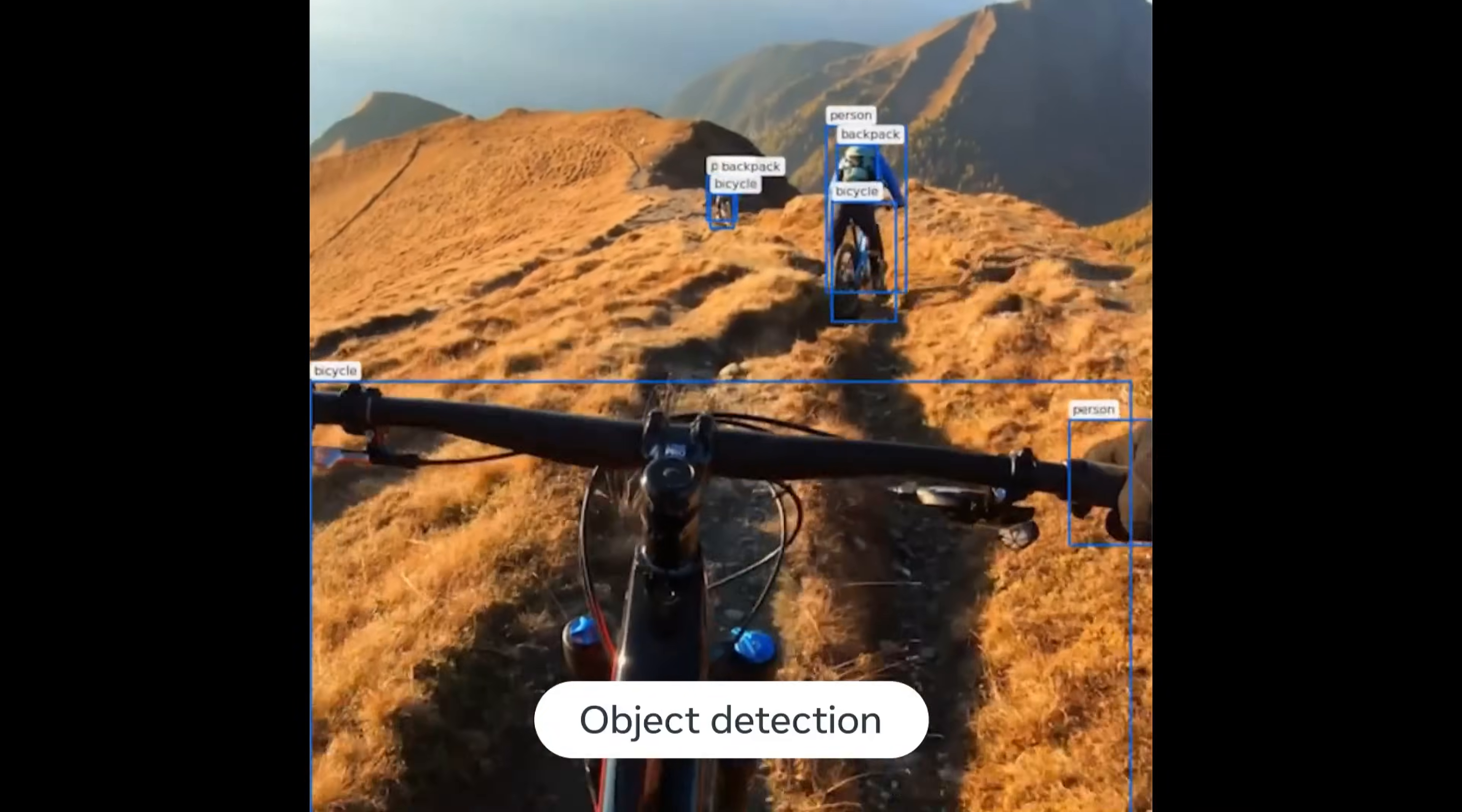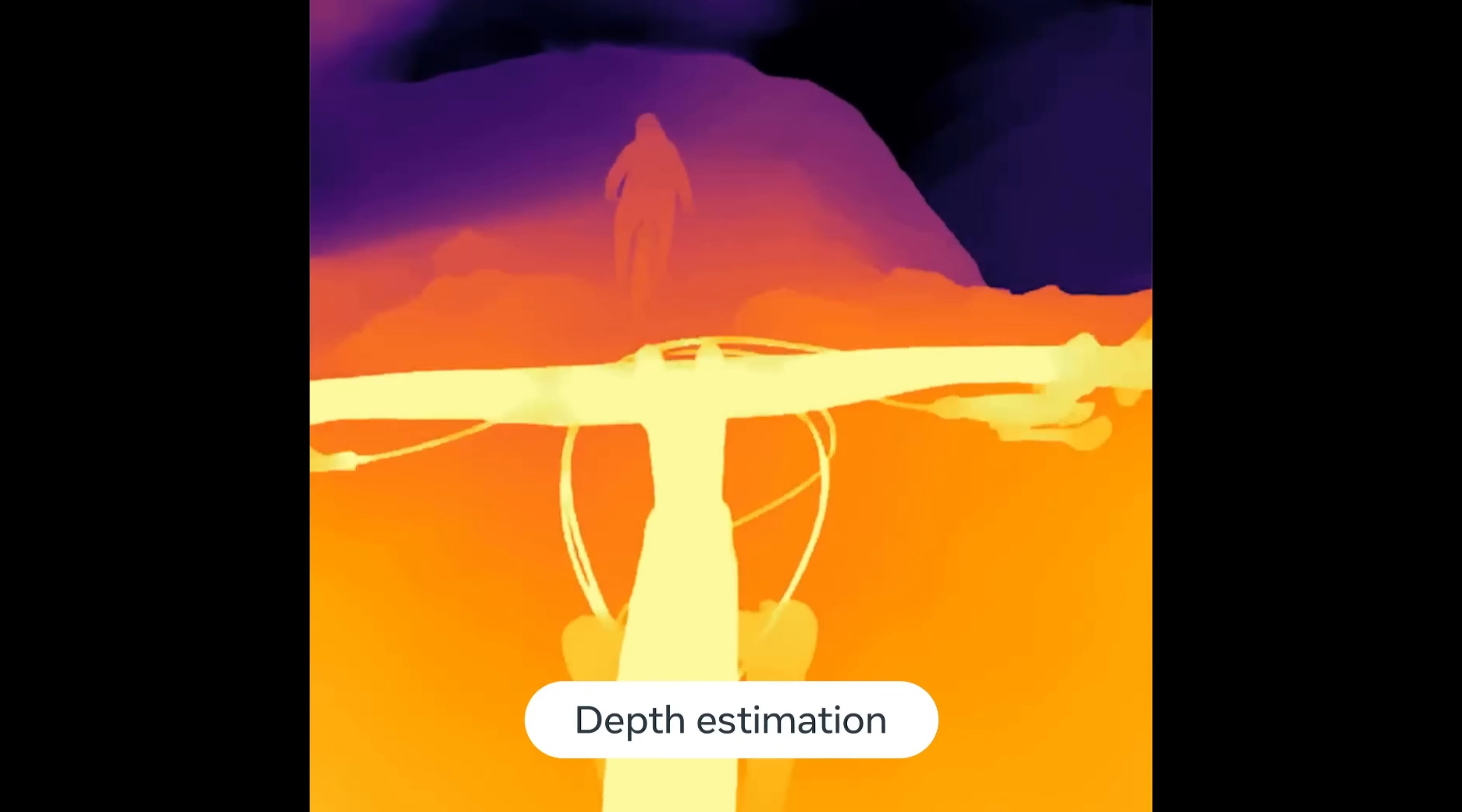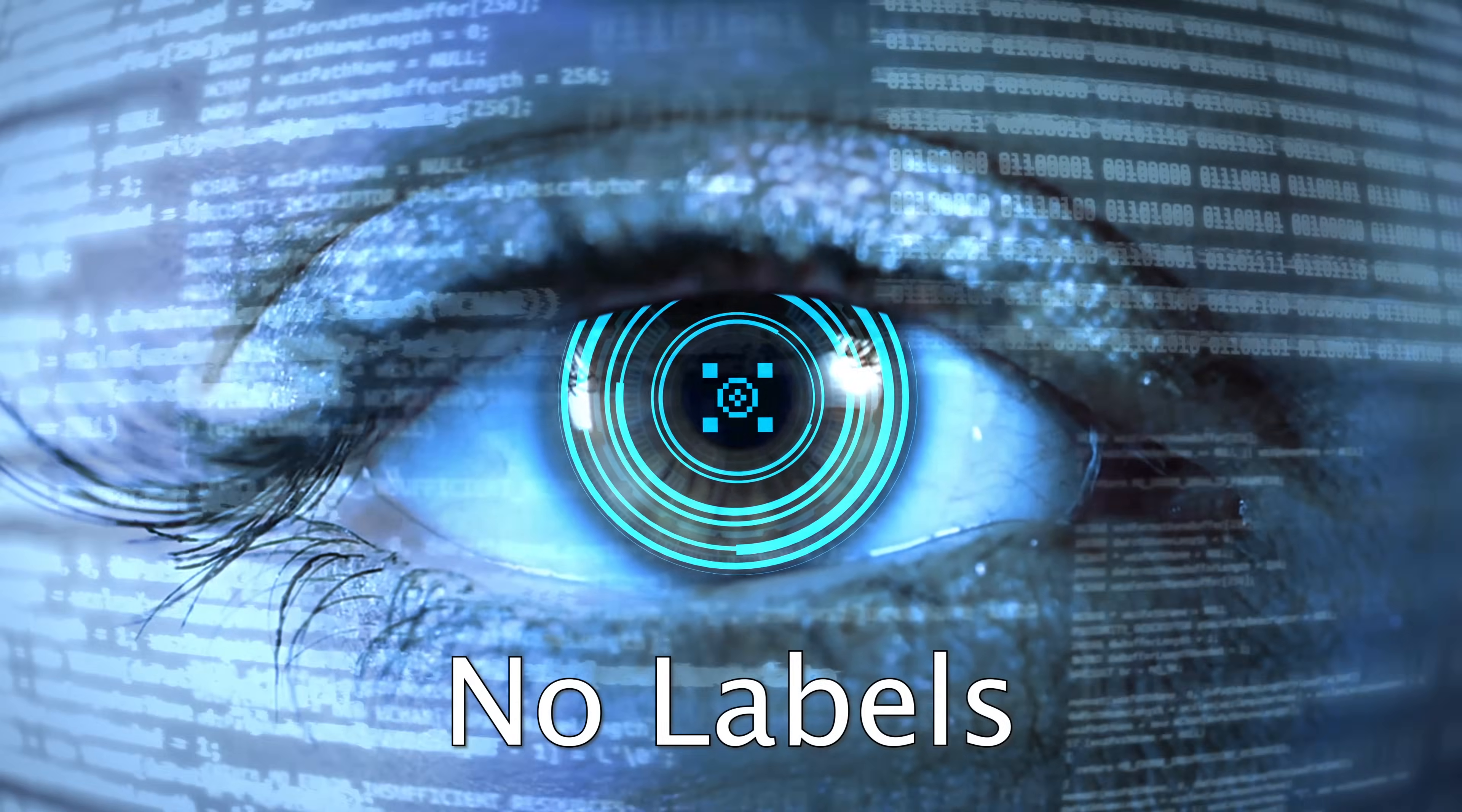When we look at images, we can easily recognize objects, semantics, and understand the 3D geometry of the world. But how can a computer do this? In this video, we will explore how AI learned to see without label data.